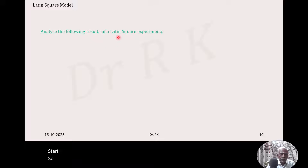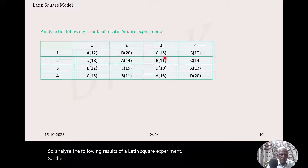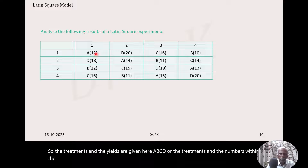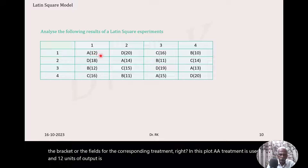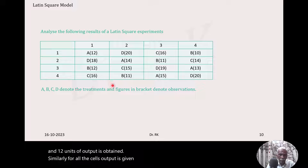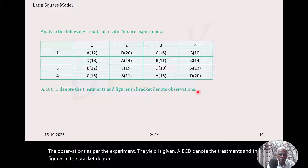We will analyze the following results of a Latin square experiment. The treatments A, B, C, D and the yields are given. The numbers within the brackets are the yields for the corresponding treatment. In this plot, treatment A is used and 12 units of output is obtained. A, B, C, D denote the treatments and the figures in brackets denote observations, that is the yield.